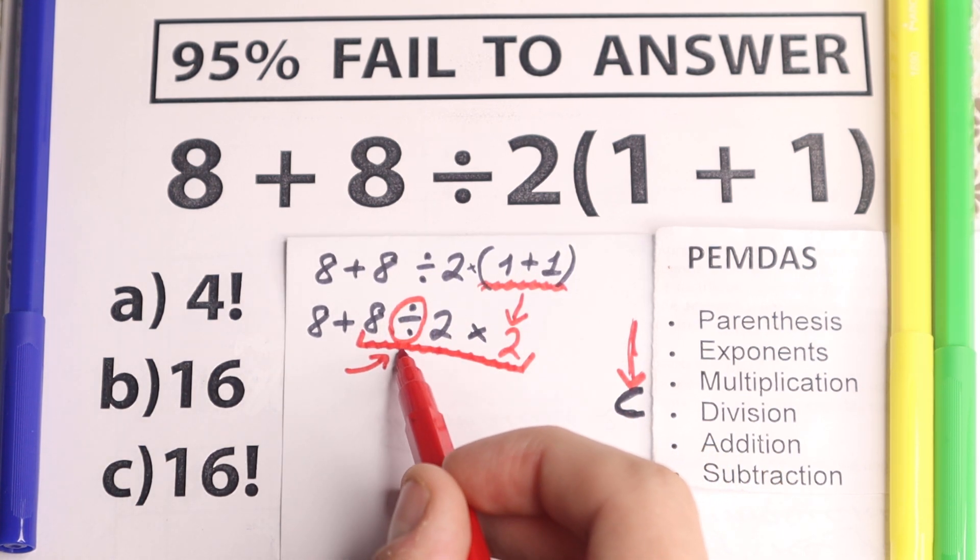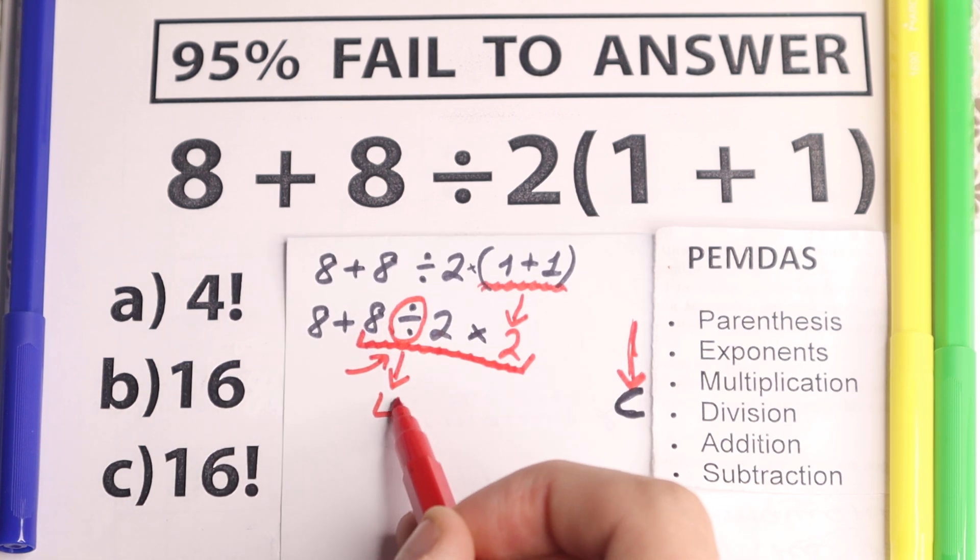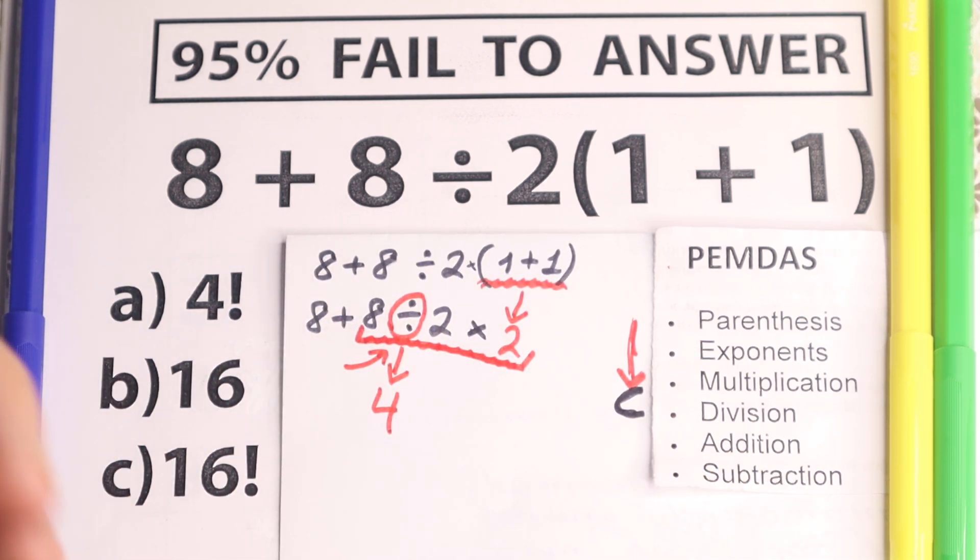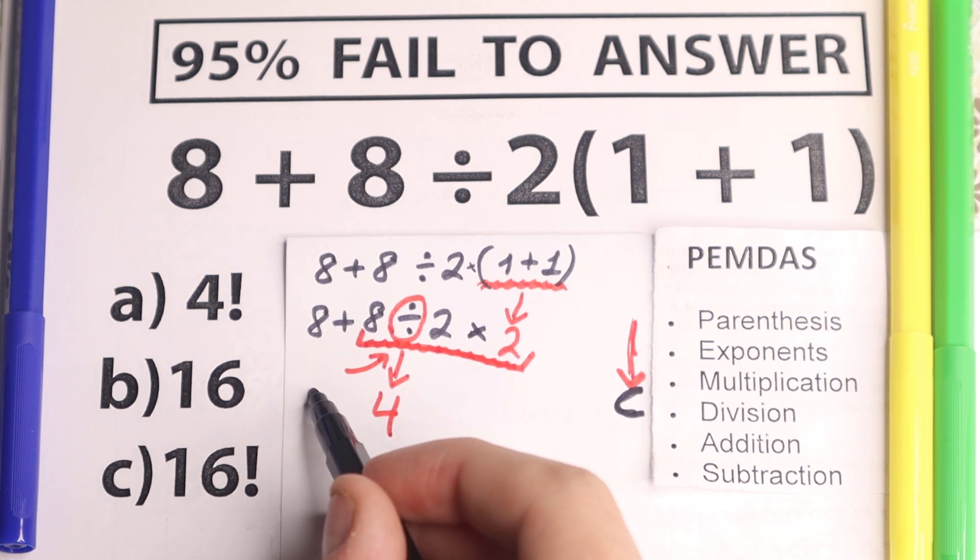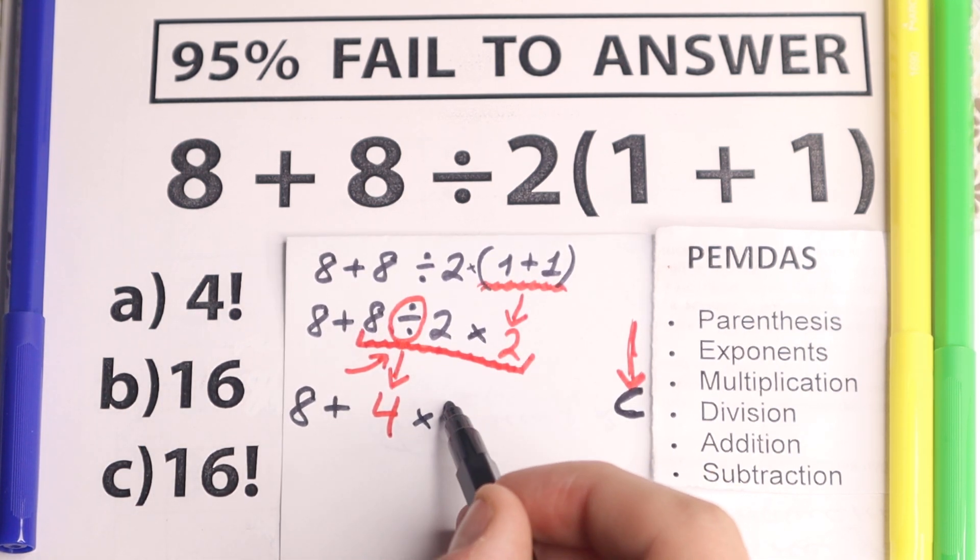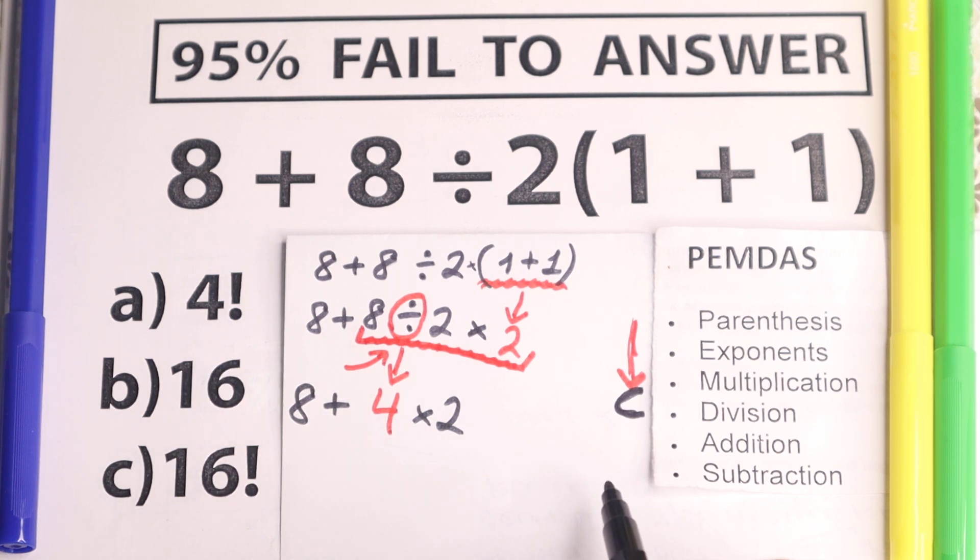Let's separate it. And right here 8 divided by 2 equals 4. And I'll just rewrite all elements from the beginning: 8 plus 4 times 2. Very simple expression right now.